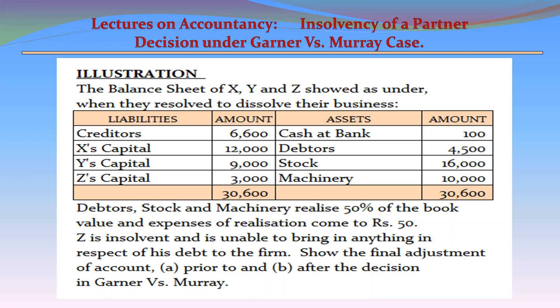Liabilities and Assets Amount. On the liabilities side: creditors 6,600; X's capital 12,000; Y's capital 9,000; Z's capital 3,000; total liabilities 30,600. On the assets side: cash at bank 100; debtors 4,500; stock 16,000; machinery 10,000; total assets 30,600.